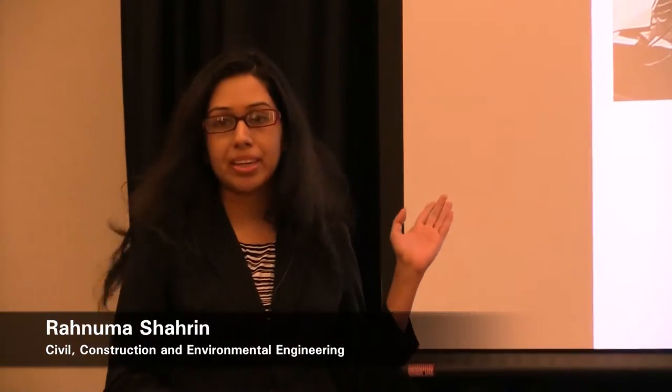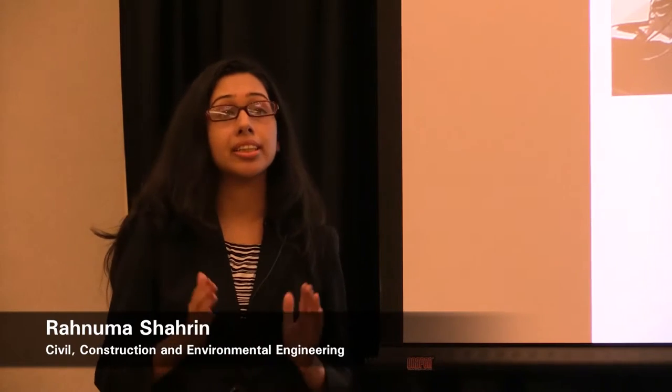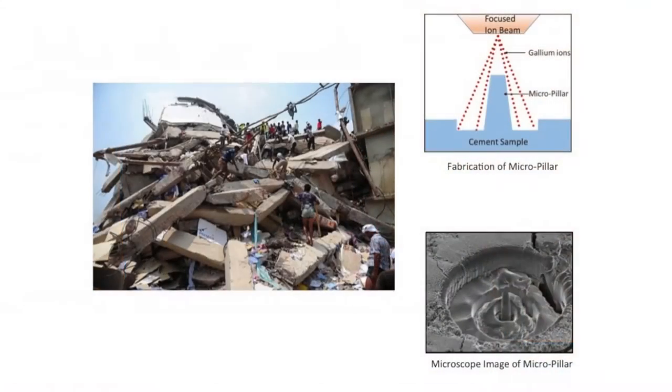I want to draw your attention to the picture of the collapsed building right behind me. This picture was taken in 2013 in the capital city of Bangladesh, where a 9-storied building collapsed all of a sudden and more than 1,100 people died. The major reason behind this catastrophic failure was use of low-strength concrete. This picture clearly tells us how important it is to have adequate strength in our concrete and to have a clear understanding about their failure mechanism. Otherwise, using tons and tons of concrete is just not going to help.